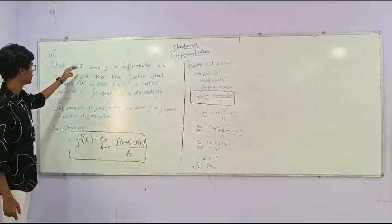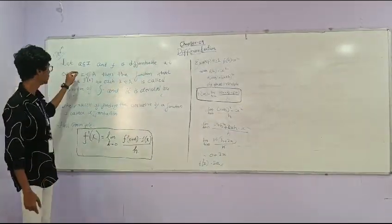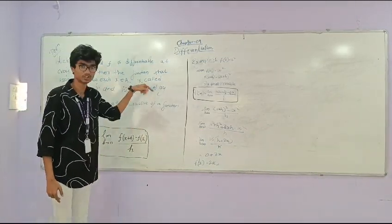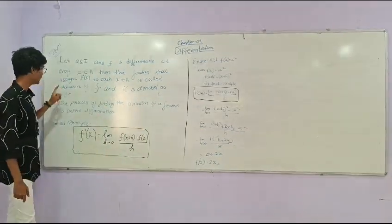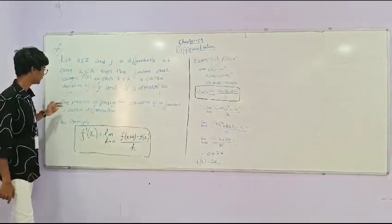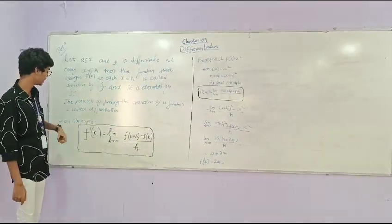Let f be a subset of I and f is differentiable at every x belongs to I. Then the function that assigns f dash of x to each x belongs to I is called derivative of f and it is denoted by f dash. The process of finding derivative of a function is called differentiation.